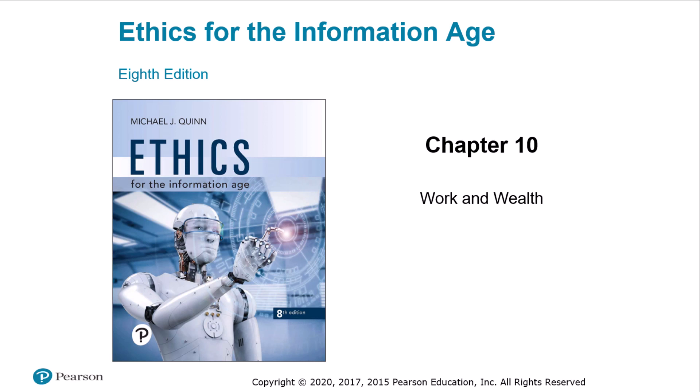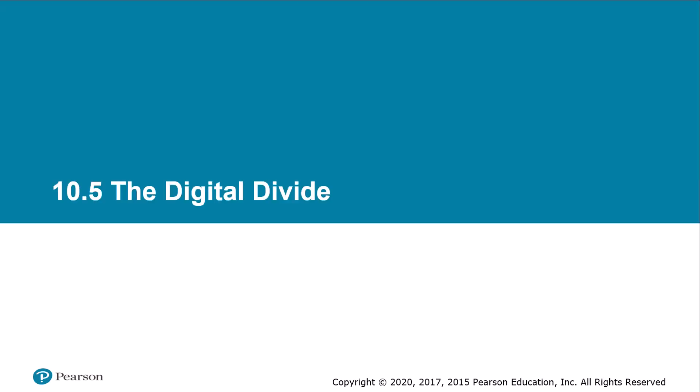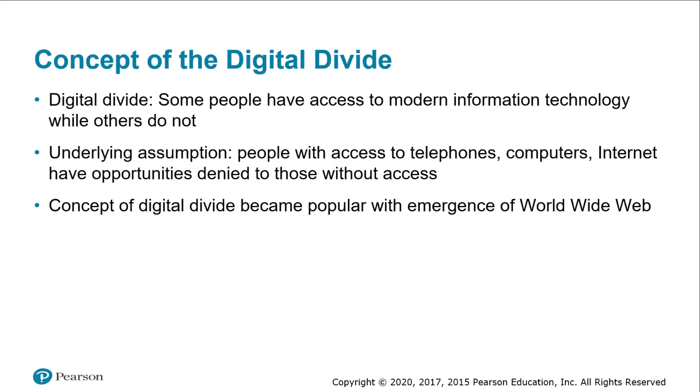In this lecture we're going to complete our exploration of chapter 10, titled 'Work and Wealth.' We're going to finish with sections 10.5 and 10.6. Section 10.5 is titled 'The Digital Divide.' The digital divide refers to the situation in which some people have access to modern information technology while others do not. The underlying assumption is that people who use cell phones, computers, and the internet have opportunities denied to those without access.